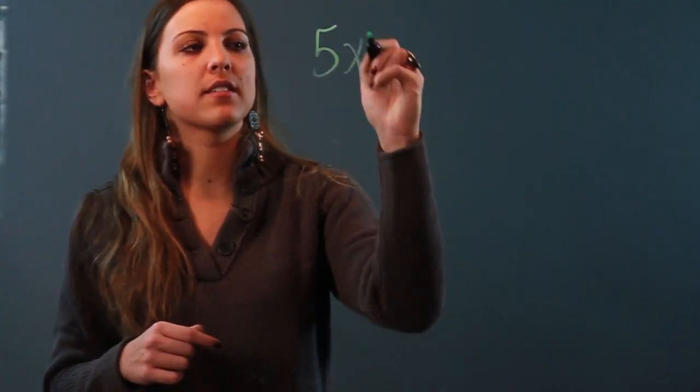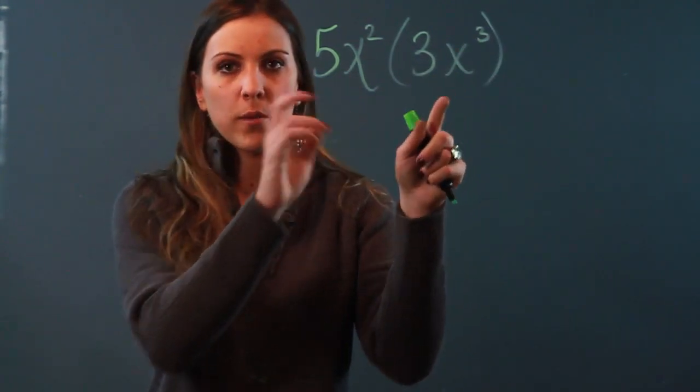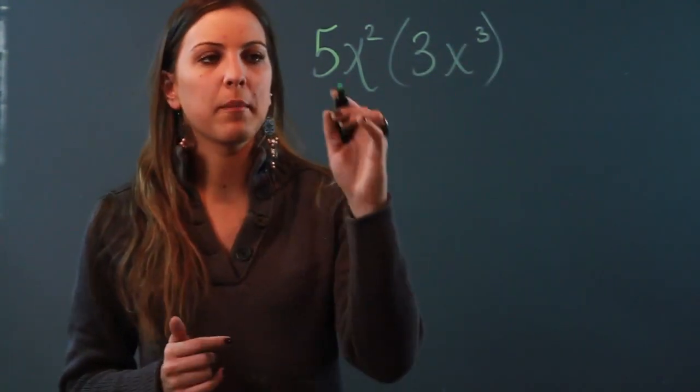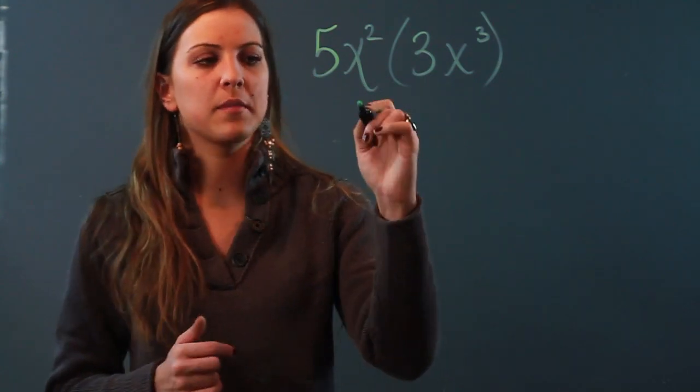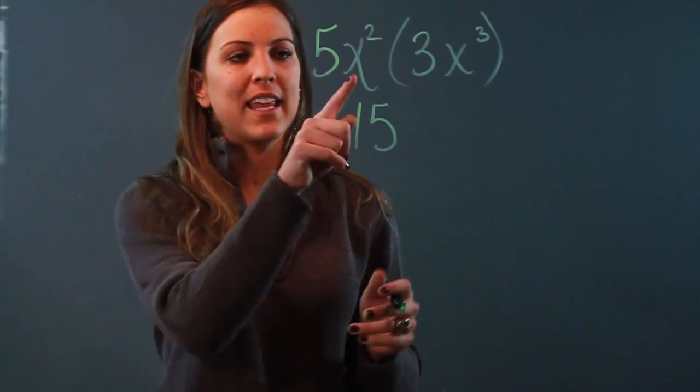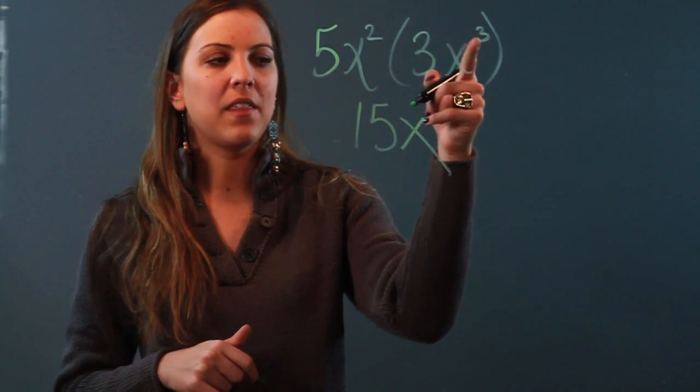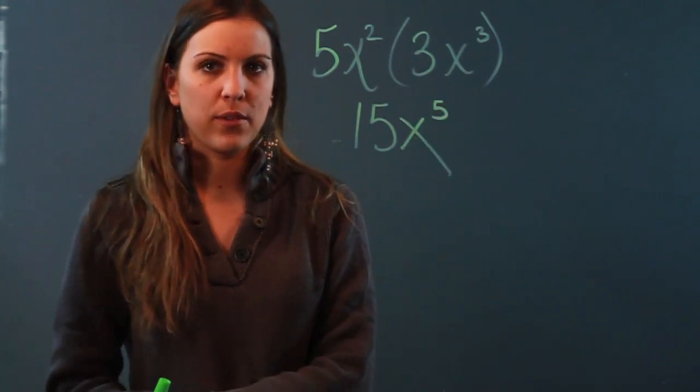If I wanted to multiply 5x² by 3x³, doesn't matter that they're not like terms because I'm multiplying now. I'm going to multiply their coefficients: 5 times 3 is 15. And now my multiplication law of exponents says that if my bases are the same, and they are (x, x), I keep the base and add the exponents: 15x⁵.